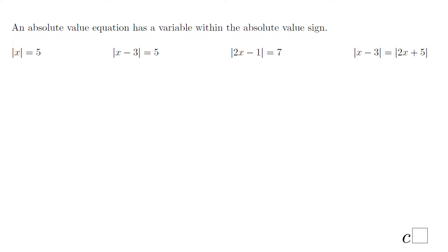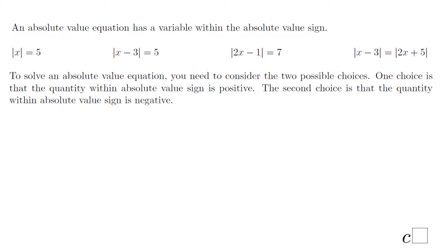What you really want to keep in mind is that there are two choices: one, when the quantity within the absolute value sign is positive, and the second one, when the quantity within the absolute value sign is negative.